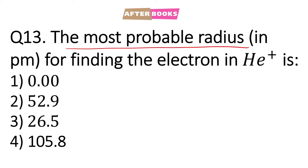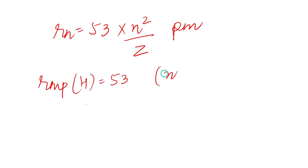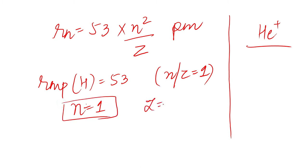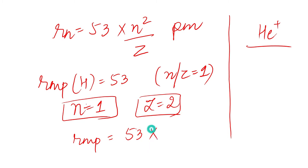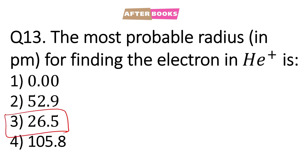Question number 13: We need to calculate the most probable radius for finding the electron in helium. The formula is Rn = 53 × n² / z picometers. For hydrogen, this is 53 since n = 1 and z = 1. For helium positive, the highest probability is closest to the nucleus, so n = 1, and z = 2. So most probable radius = 53 × 1 / 2 = 26.5, which is option number 3.